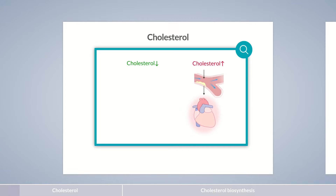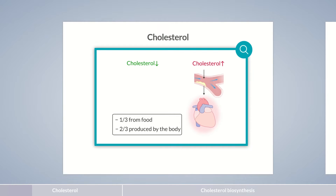Where does the cholesterol in the body come from, and how can levels be decreased? A healthy diet plays an important role, but it won't often be enough to lower cholesterol levels on its own. Around one-third of cholesterol comes from food, particularly animal products such as meat, butter, and egg yolk. The remaining two-thirds are produced by the body, controlled by a complex regulatory mechanism. Before we take a detailed look at the development of atherosclerosis, let's delve into the physiological functions and biosynthesis of cholesterol in this Chalk Talk episode.